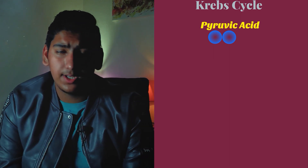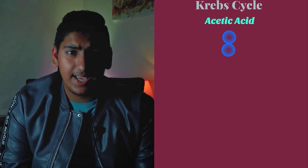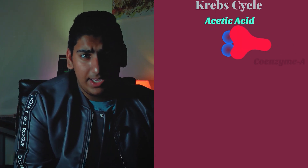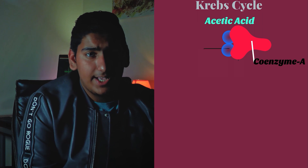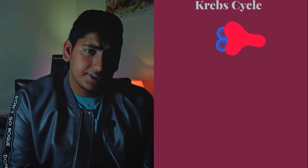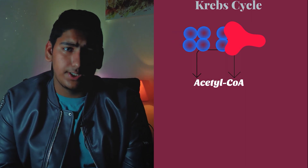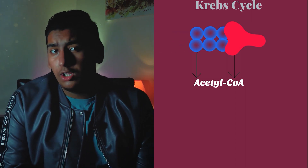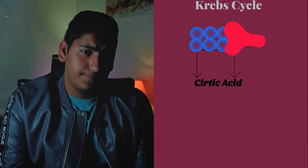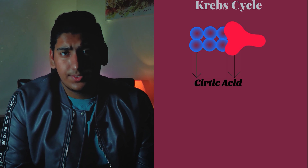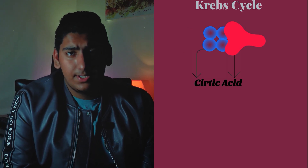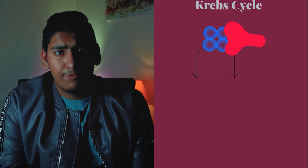The other two carbon atoms from the pyruvic acid rearrange to form acetic acid. Then, coenzyme A attaches to acetic acid, and the new molecule is called acetyl coenzyme A. As the Krebs cycle continues to run, the acetyl group joins a four carbon molecule. As a result, the new molecule is called citric acid. Then, two carbon atoms are released from citric acid, leaving behind four carbon molecules.